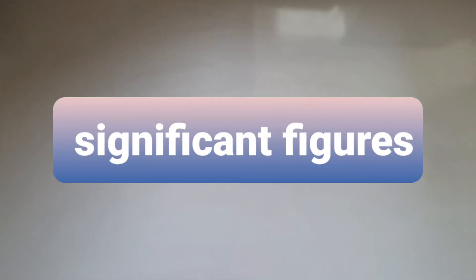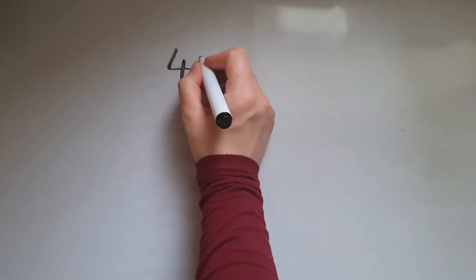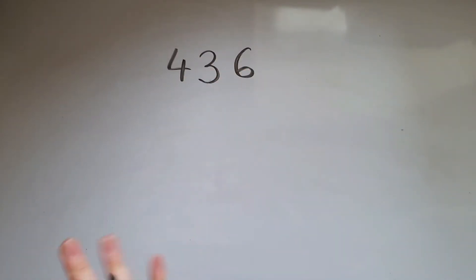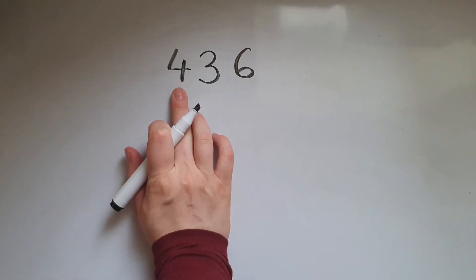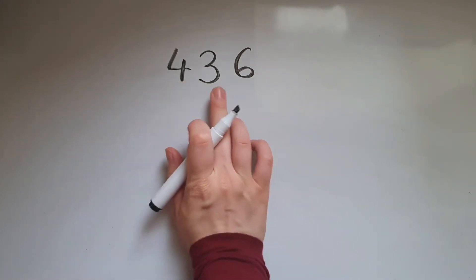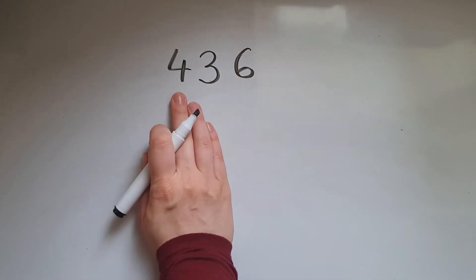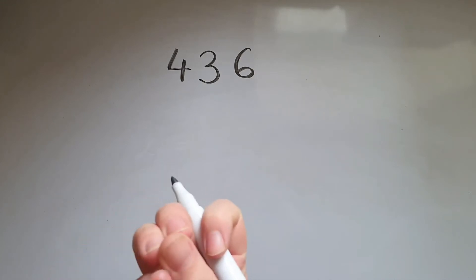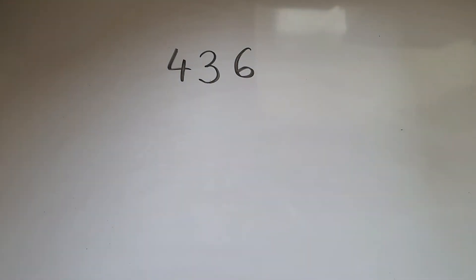In this video we learn to round to significant figures. So what are significant figures? Let's just take the number 436. We know the value of each digit: that is the hundreds, this is the tens, and this is the units. So the digit with the highest value — that is the first significant figure.